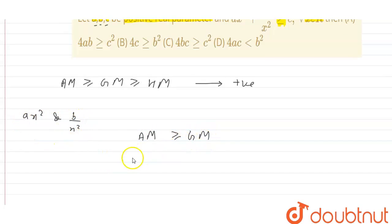So let us apply here AM, that is arithmetic mean, which is always greater than or equals to geometric mean. Arithmetic mean of these two variables will be (ax² + b/x²)/2, which is always greater than or equals to its GM, that is (ax² × b/x²)^(1/2), the turn number of terms that is 2.